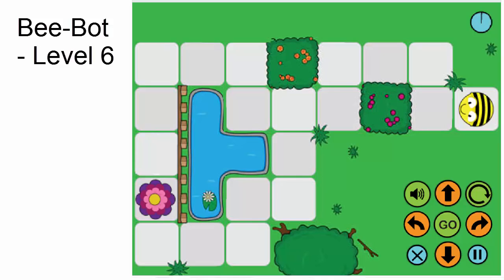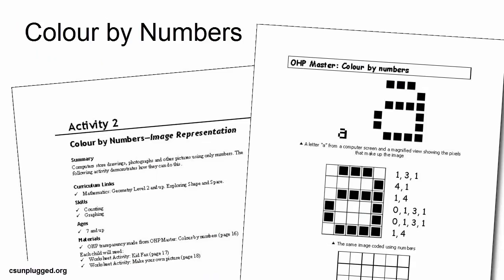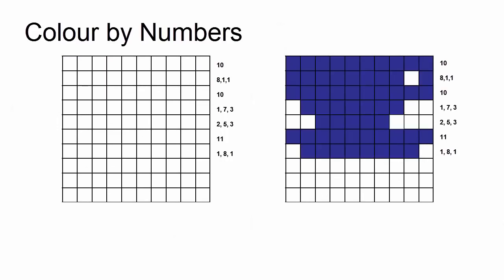We will return to Bebot again later in the training. The activity Color by Number, Image Representation, provides opportunity for both synthesis and analysis in decomposition. Students follow basic instructions to fill in squares on graph paper that collectively form a recognizable image, an example of synthesis.